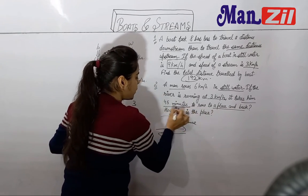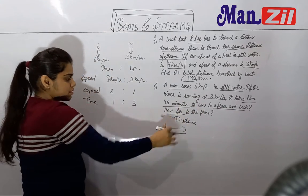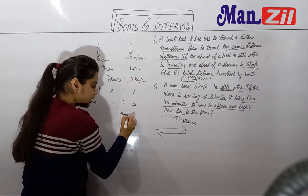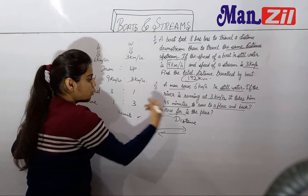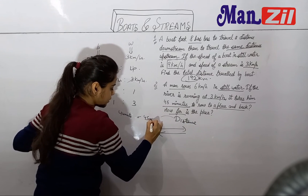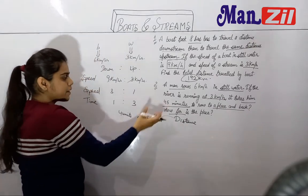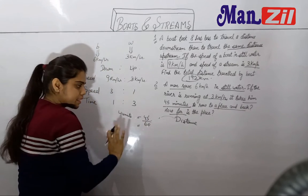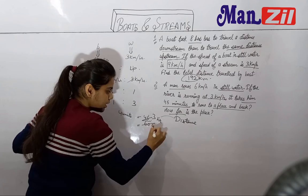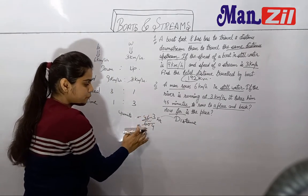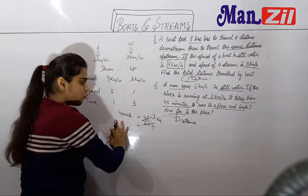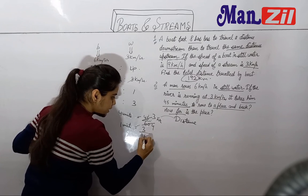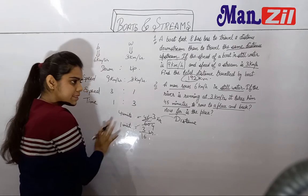The person takes 45 minutes total to cover the distance going and coming back. Total time units are 1 plus 3 equals 4 units. Since our question is in km per hour, I will convert 45 minutes to hours by dividing by 60, which gives 3 by 4 hours. So 4 units equals 3 by 4 hours, meaning 1 unit equals 3 by 16 hours.